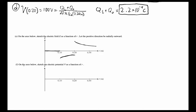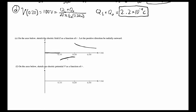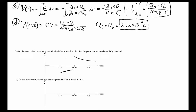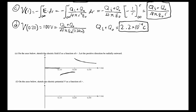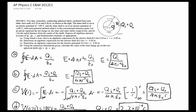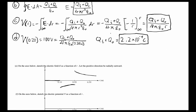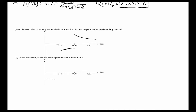For part f, we sketch the electric potential V as a function of r. The electric potential is the negative integral of the electric field. From r equals 0 to r equals 0.1, the electric field is zero, so the potential does not change. At r equals 0.1 it has a value of negative 100 volts, so the potential is constant at negative 100 volts throughout this region.